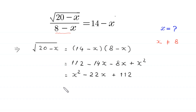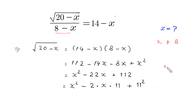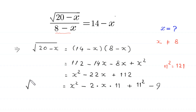We complete the square: x squared minus 22x can be written as 2 times x times 11, so we add 11 squared (which is 121). Since the original expression has 112, we subtract 9 to compensate, giving x squared minus 22x plus 121 minus 9, and the left-hand side is the square root of (20 minus x).